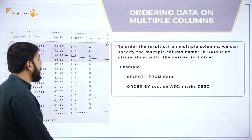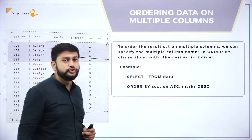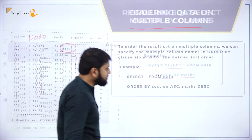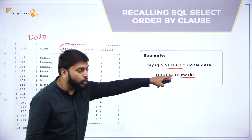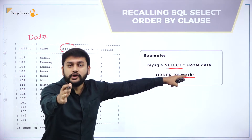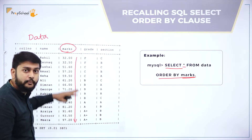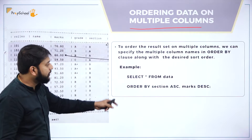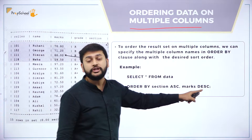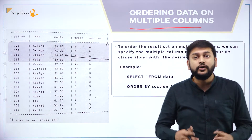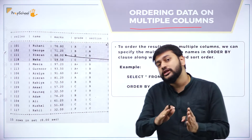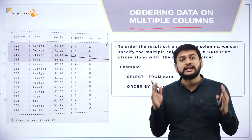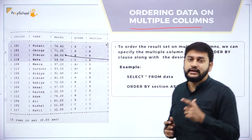Moving on to ordering data on multiple columns. In the previous example I sorted only one column. But in the next example, I am giving more than one column in the ORDER BY clause. Let's understand how exactly that works.